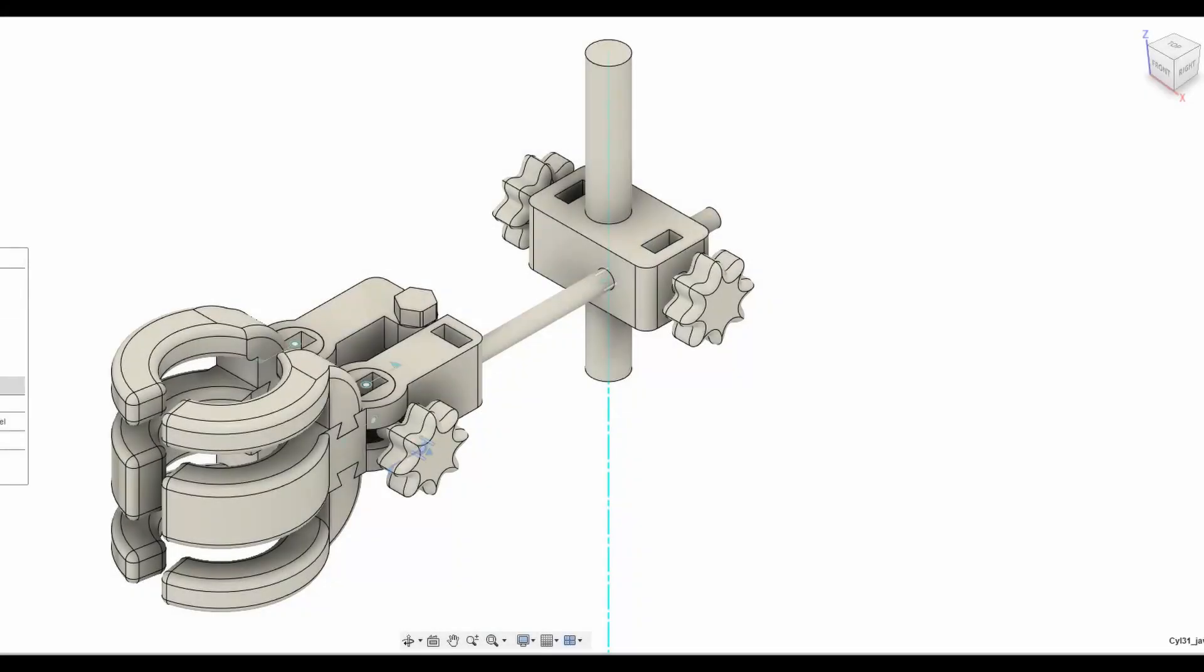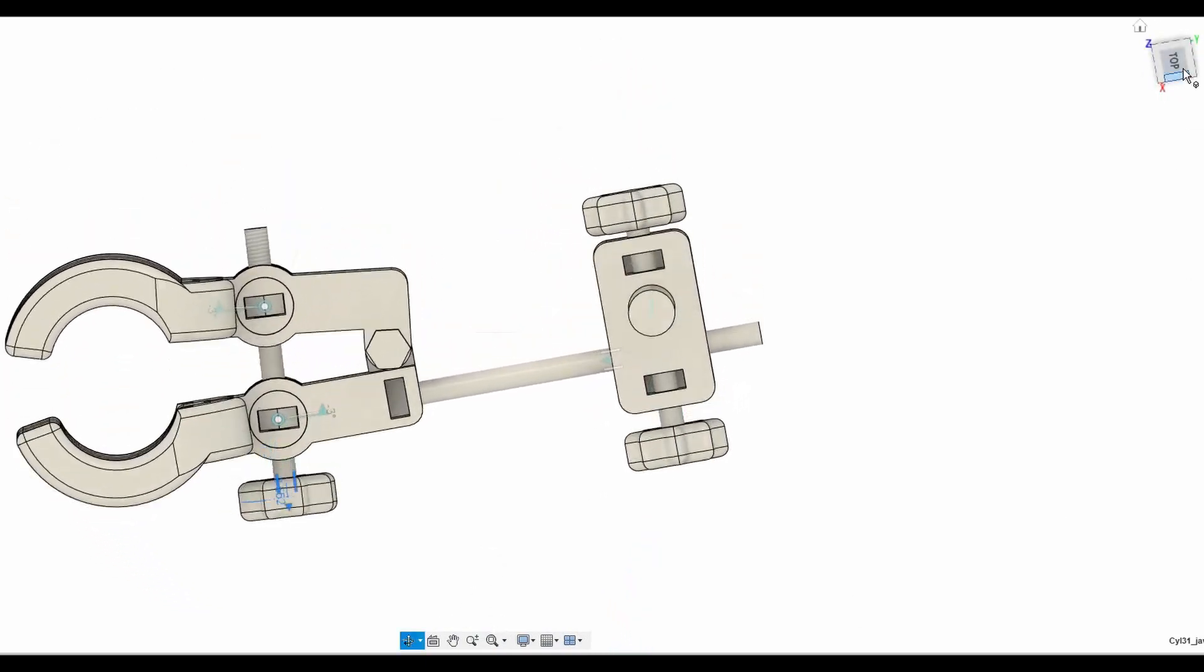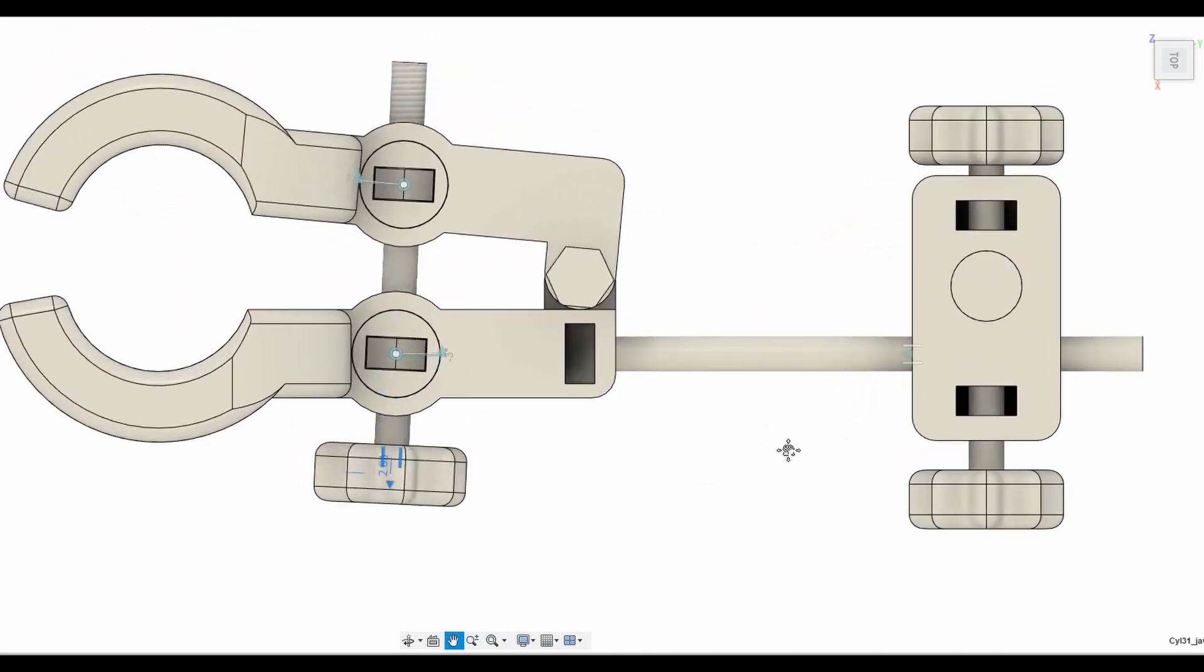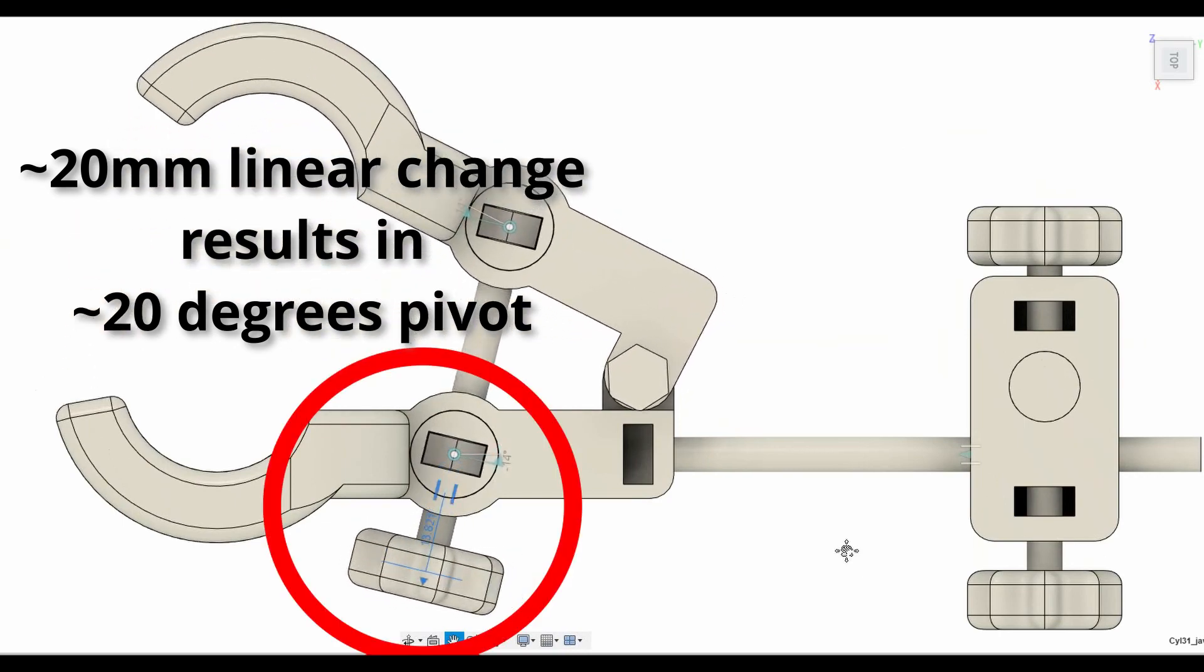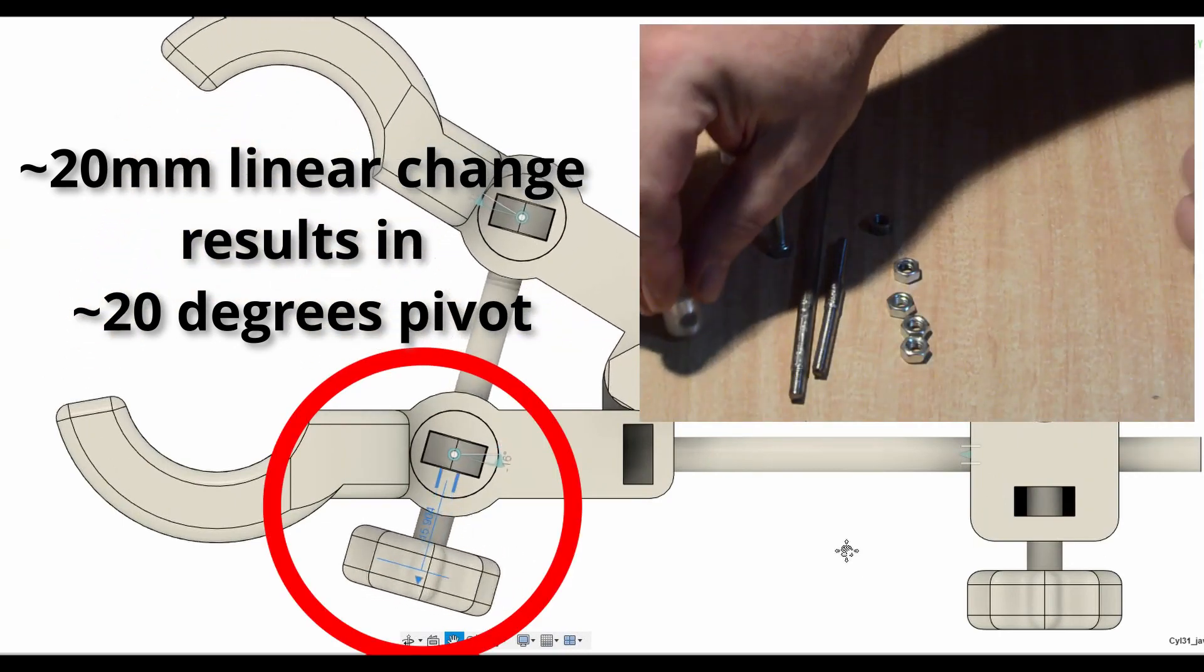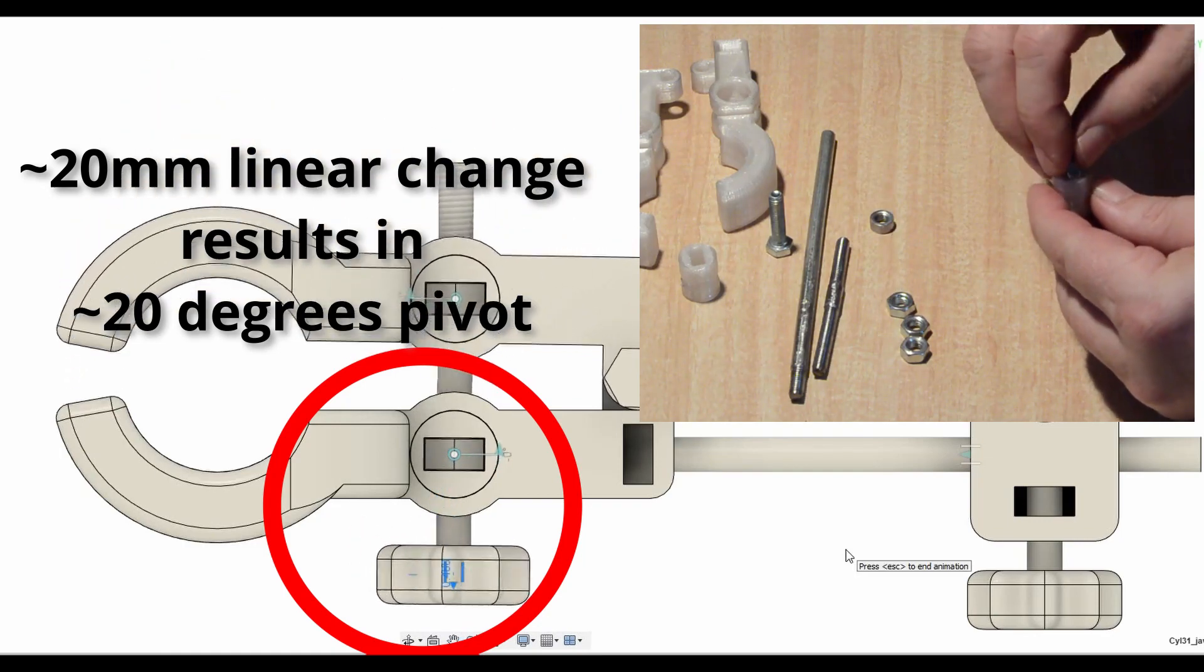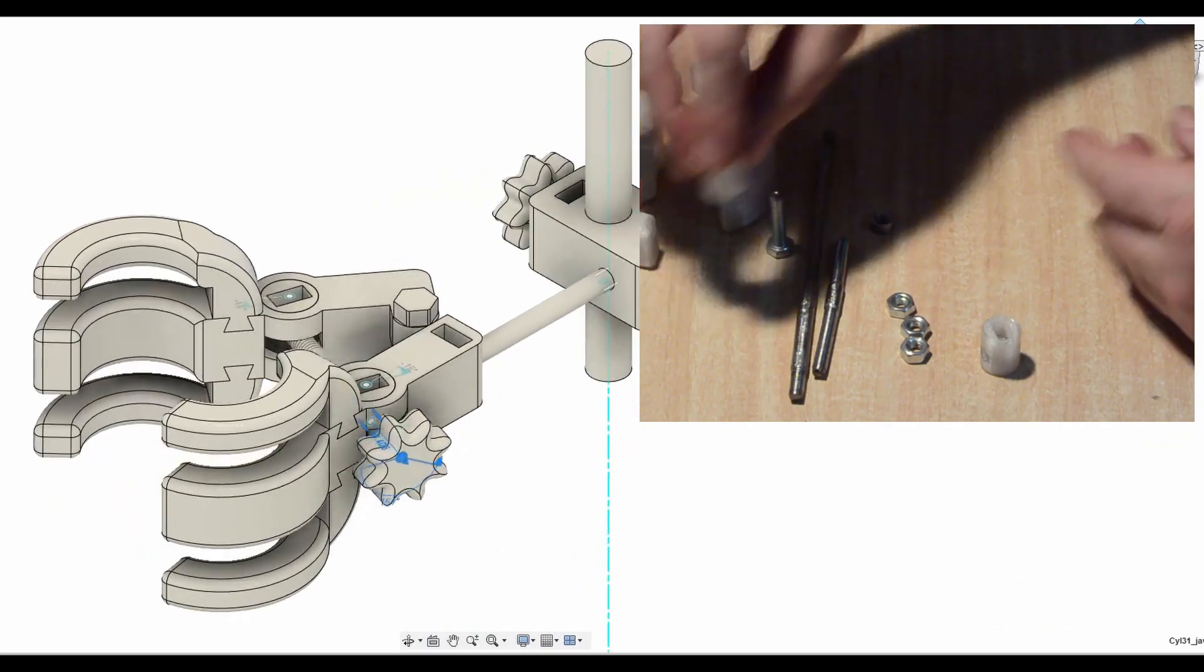However, one of the complicating factors is that the axis of the adjustment screw, which controls opening of the jaws, changes angle with respect to the jaws when the position of the jaws is altered. This means that the retaining nuts of the jaw position adjustment screw need to pivot. These pivoting components are just cylinders, into which a hex nut can be inserted, which adds strength and stops wear over time, as opposed to using the plastic material itself for the thread.